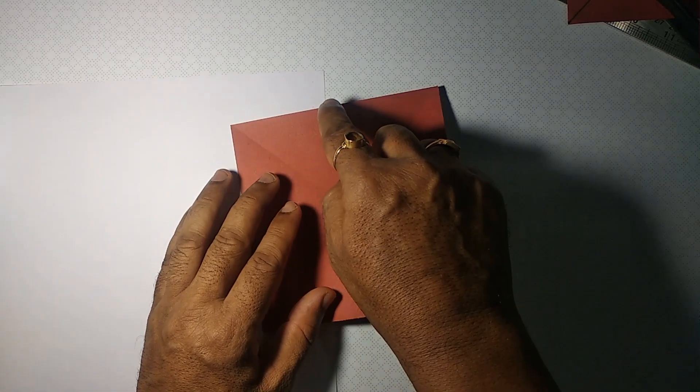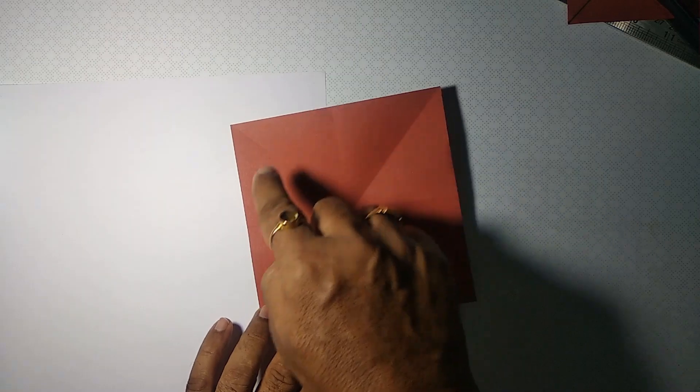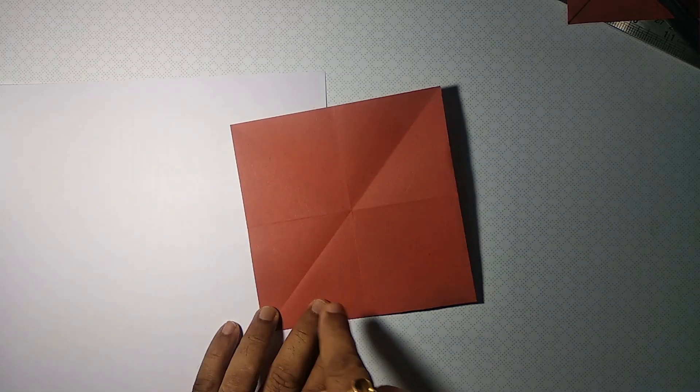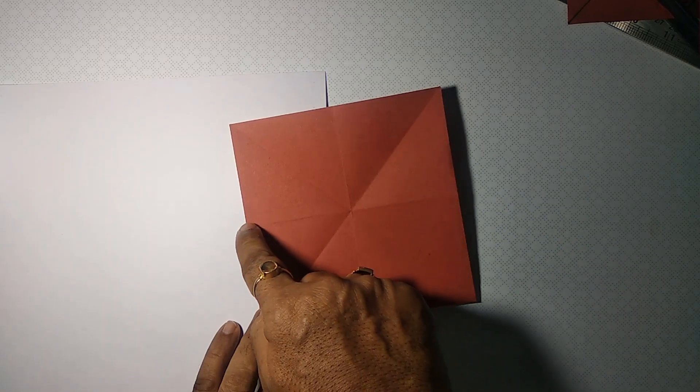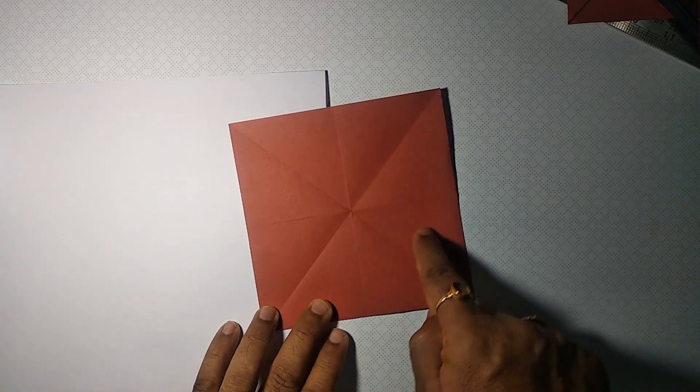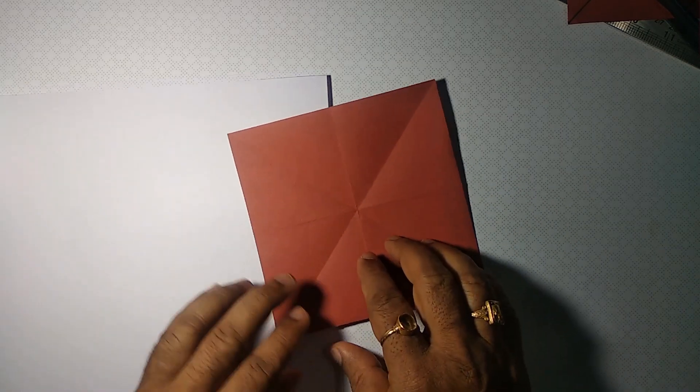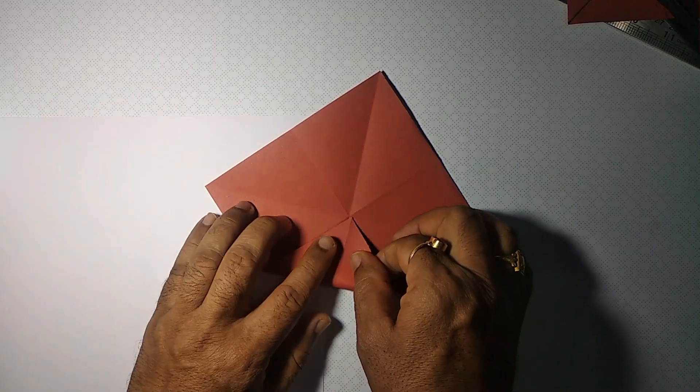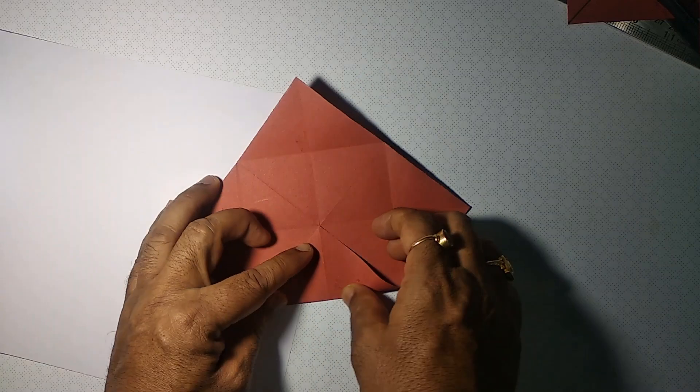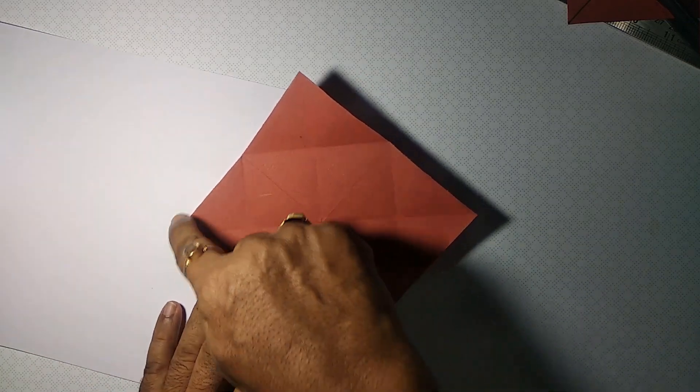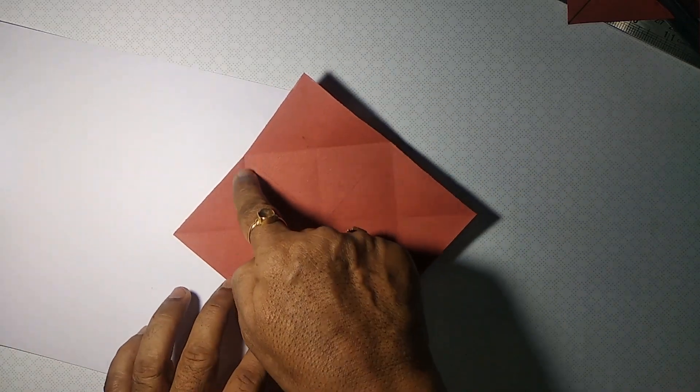Now let's identify the centers of the sides of this square and form creases between those two points. In this way shown, make a right-angled isosceles triangle fold, and make on all the four sides. You will get the new square formed.